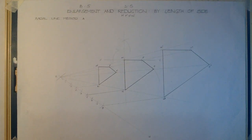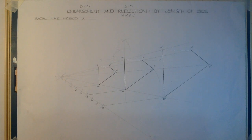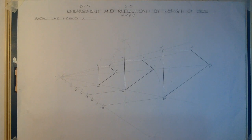This brings us to the end of our video tutorial on the enlargement and reduction of plane figures — a quadrilateral in particular — using the radial line method A. Thank you for viewing.